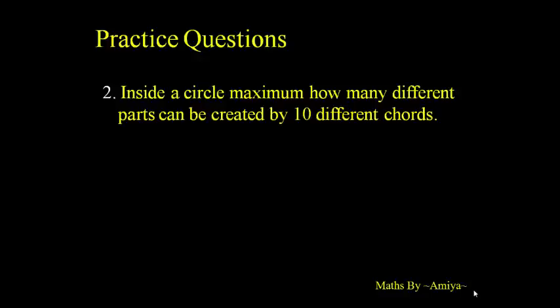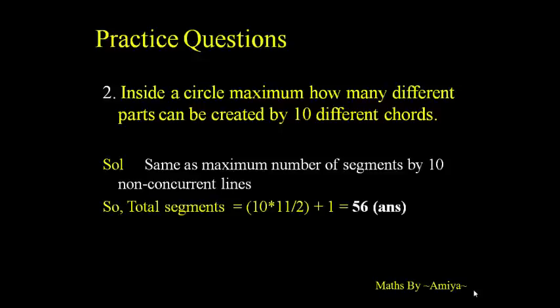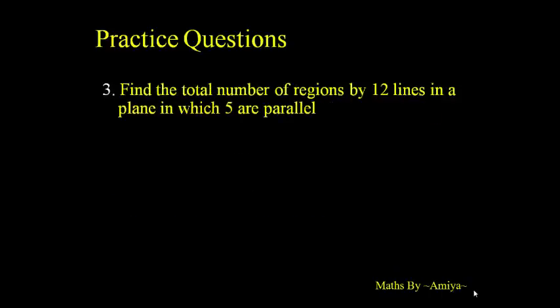Question 2: maximum number of segments by 10 non-concurrent lines in a plane — that is nothing but σn + 1 = 10×11/2 + 1 = 56. Note: chords caught in a circle is the same as lines in a plane.